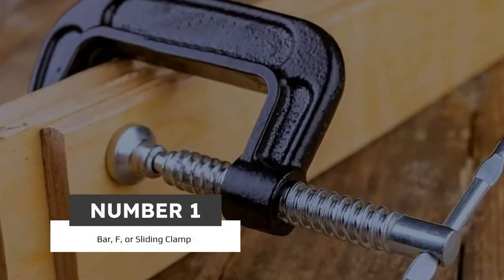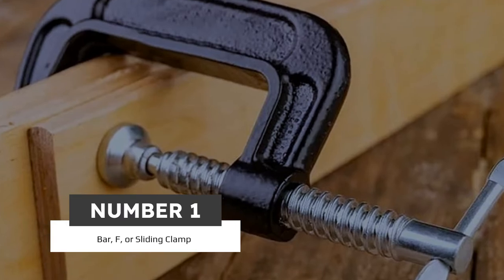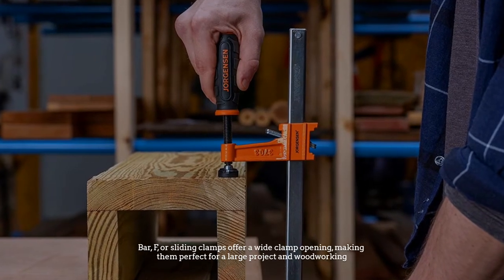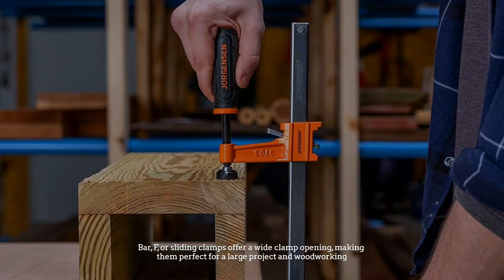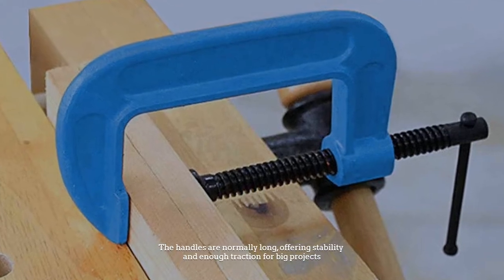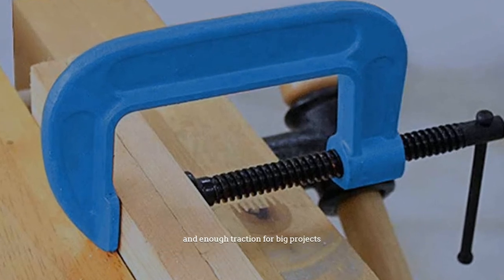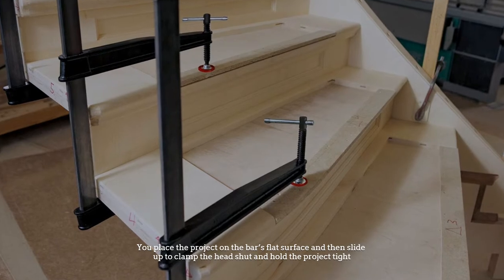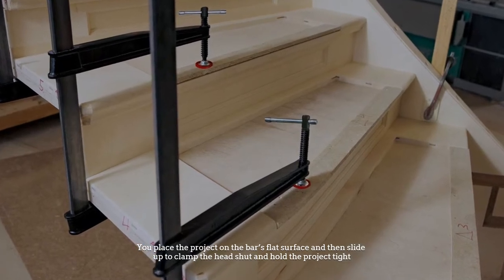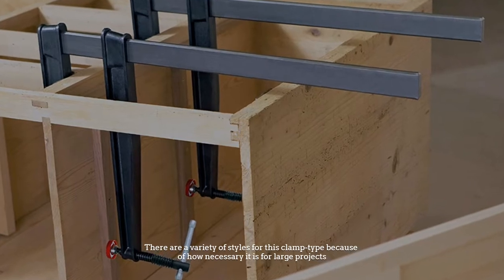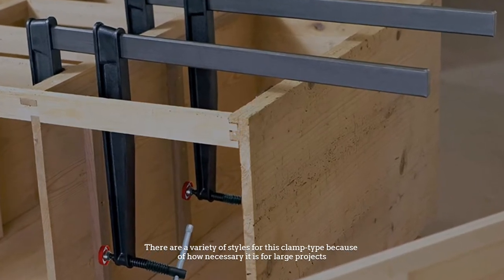Number one: Bar F or sliding clamp. Bar F or sliding clamps offer a wide clamp opening, making them perfect for large projects and woodworking. The handles are normally long, offering stability and enough traction for big projects. You place the project on the bar's flat surface and then slide up to clamp the head shut and hold the project tight. There are a variety of styles for this clamp type because of how necessary it is for large projects.